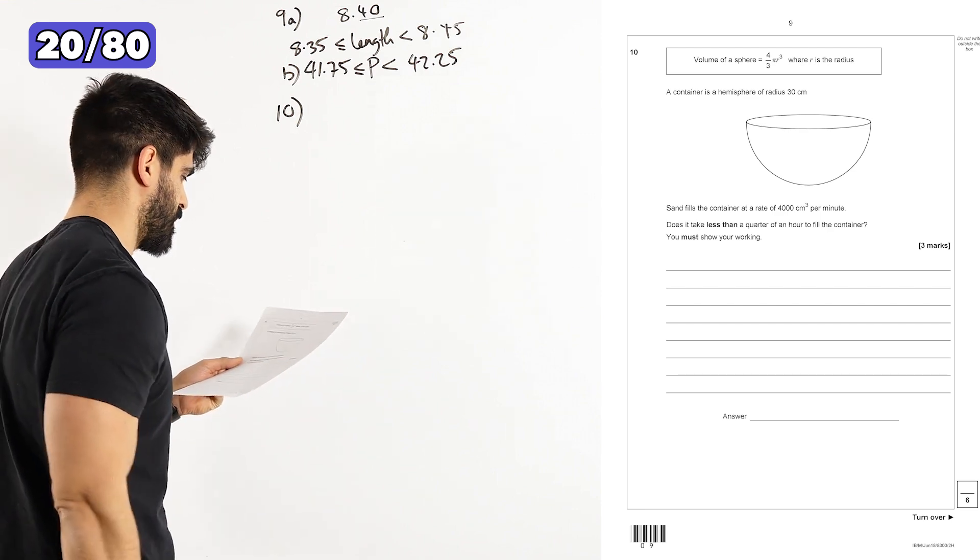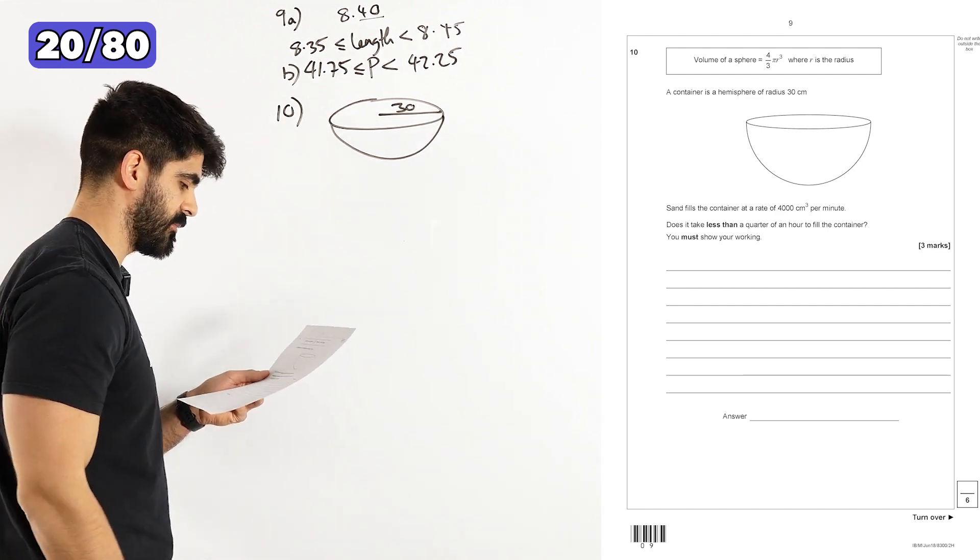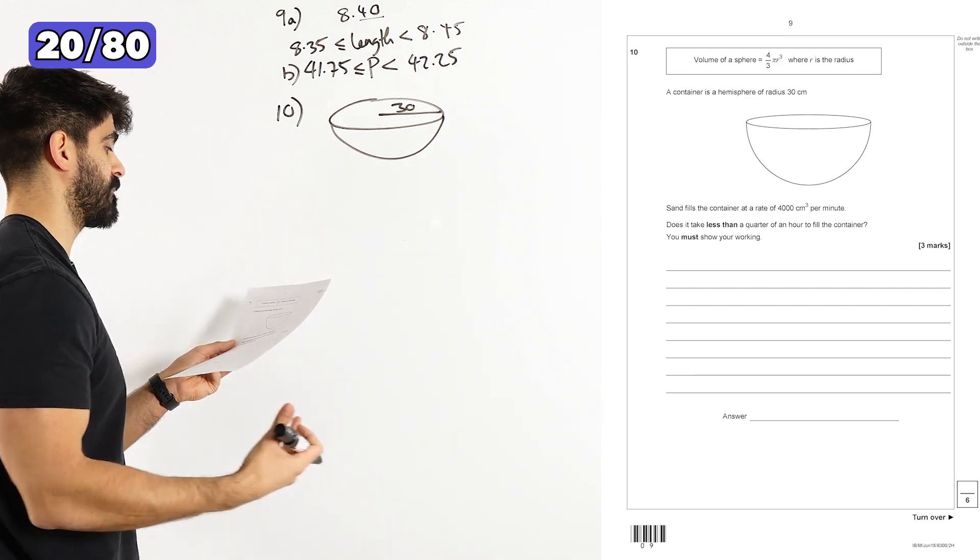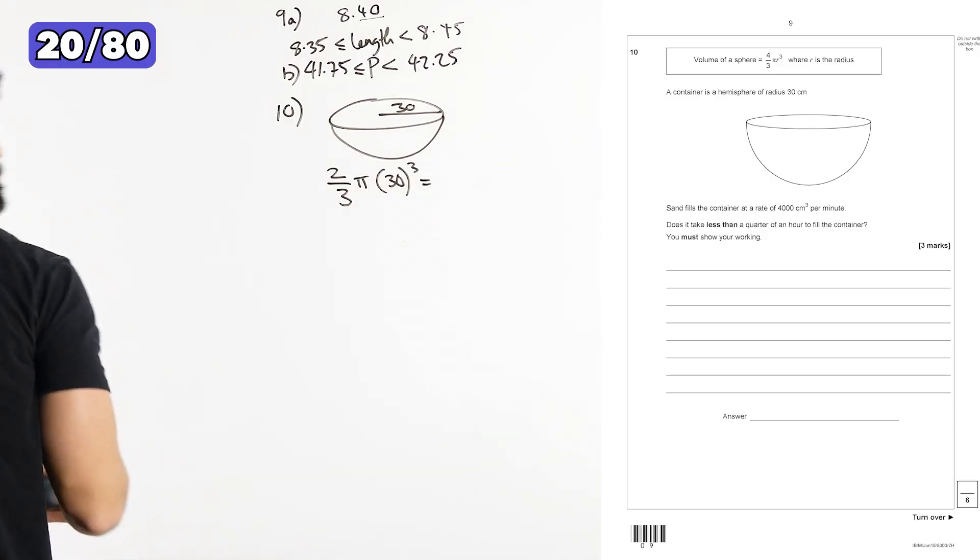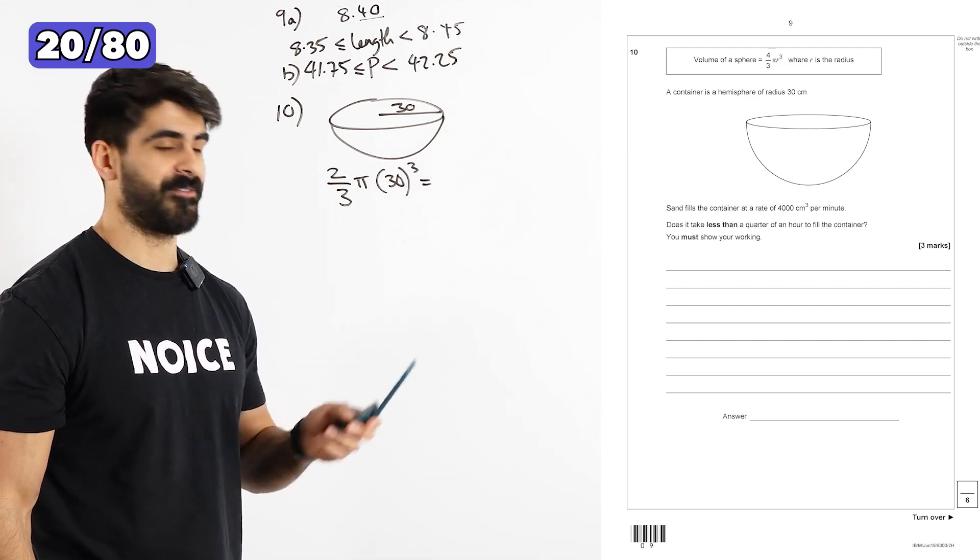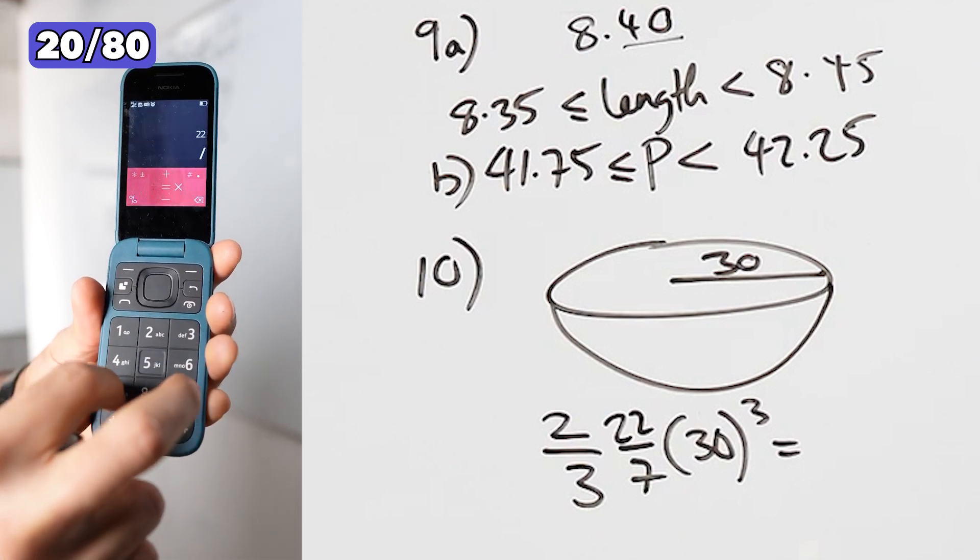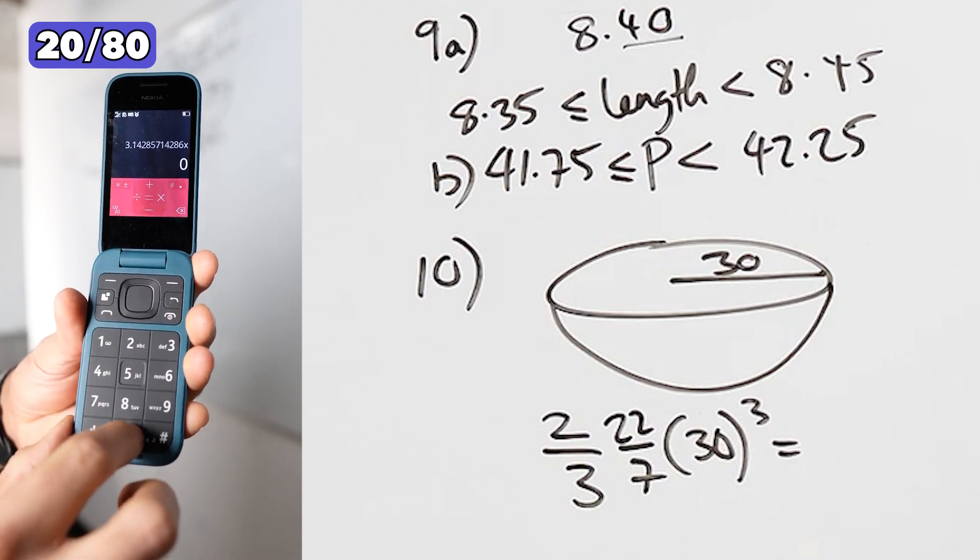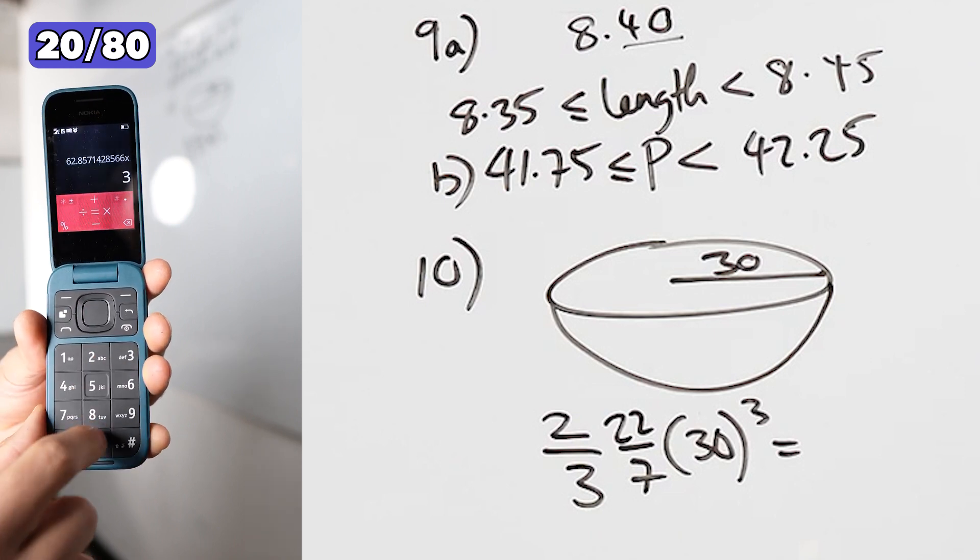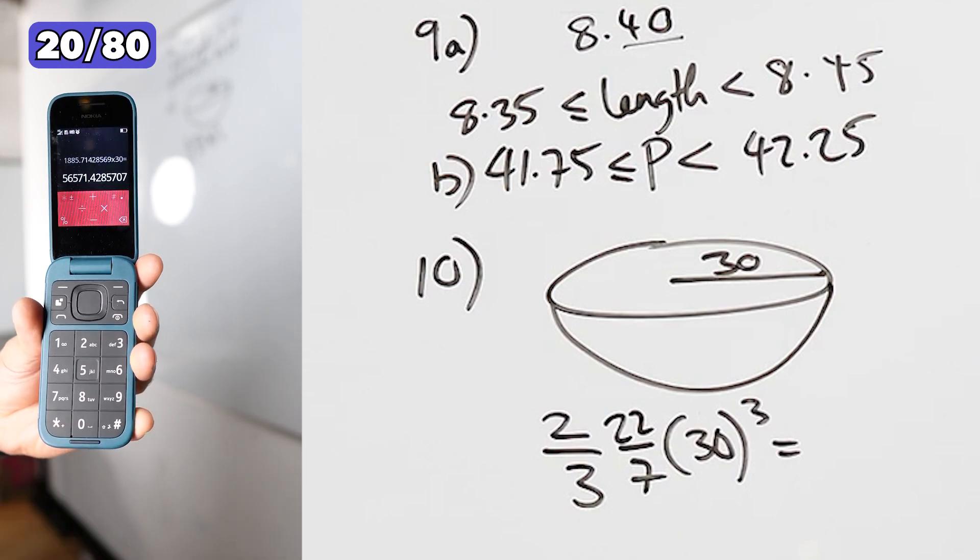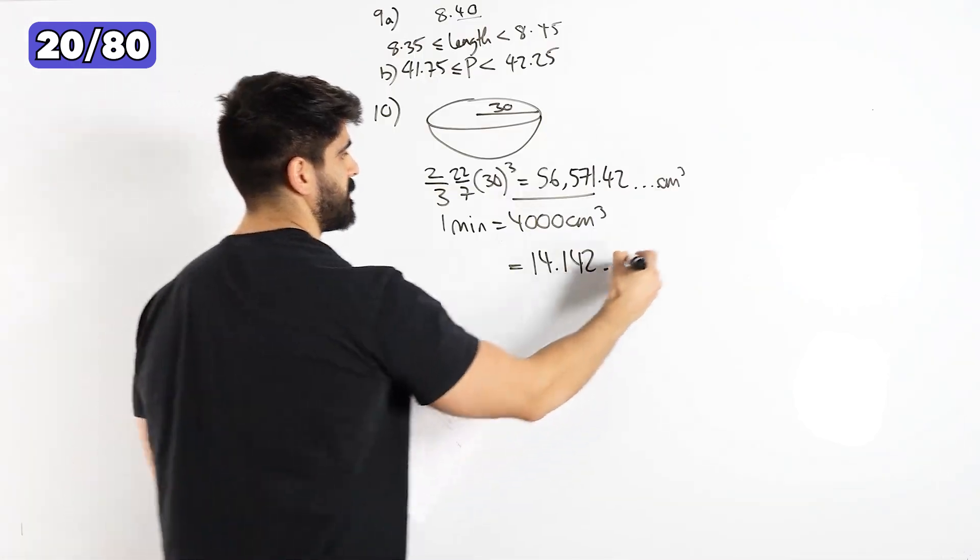Part 10. They told you the volume of a sphere is 4 thirds pi r cubed. A container is a hemisphere of radius 30. Sand fills the container at a rate of 4,000 centimeters cubed per minute. Does it take less than a quarter of an hour to fill the container? We need to calculate the volume. If the volume of a sphere is 4 thirds pi r cubed, then a hemisphere is 2 thirds pi radius cubed. My calculator doesn't have a pi button. Oh no. I'm going to have to use 3.14. I could be cheeky here. I could use 22 over 7. Only the real ones know about 22 over 7. I can't store values. So I'm going to do 22 divided by 7 times 2 thirds, times that by 0.6, times 30 times 30 times 30. That gives me 56,571.42. Does it take less than a quarter of an hour? Yes, because that's less than 15 minutes.